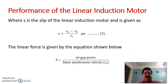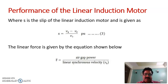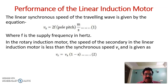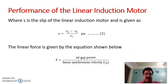Slip is calculated similarly to the conventional motor: slip s = (vs − vr) / vs. The linear force is obtained as: linear force = air gap power / linear synchronous velocity. The air gap power is known, and linear synchronous velocity is calculated as 2f × pole pitch, from which the linear force can be determined.